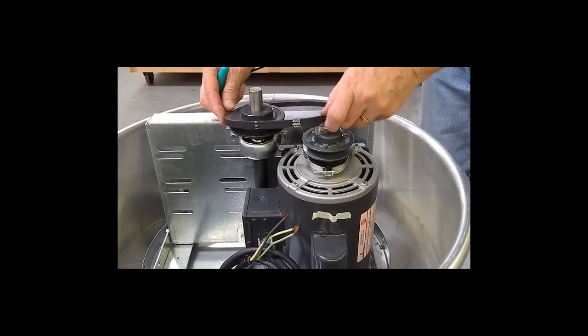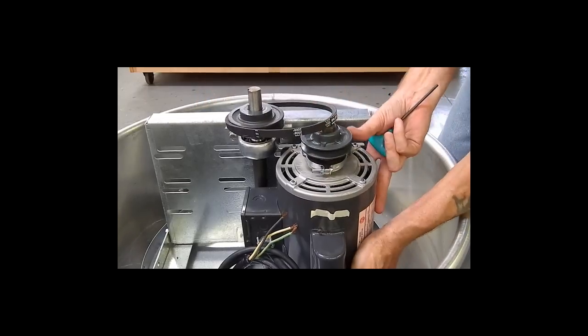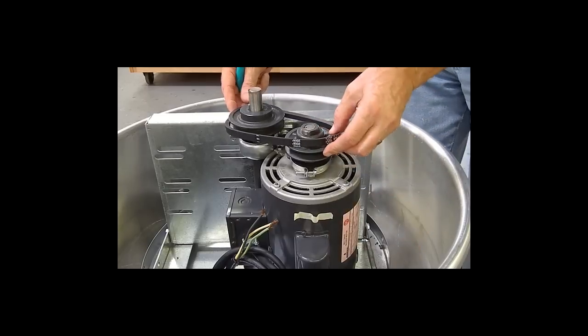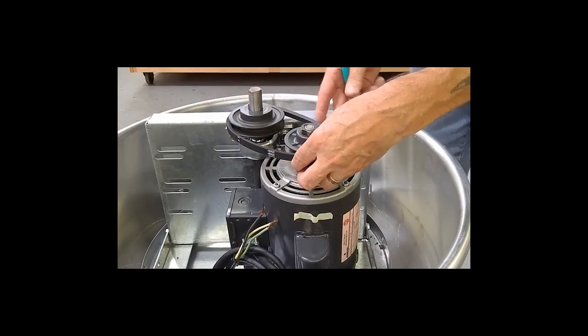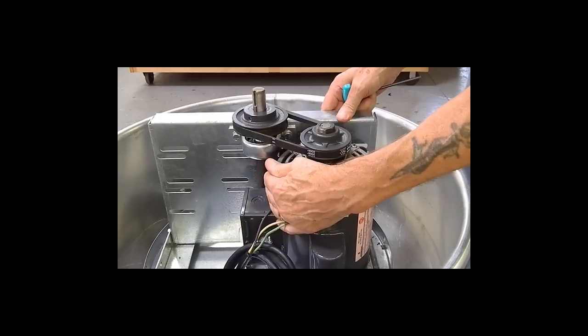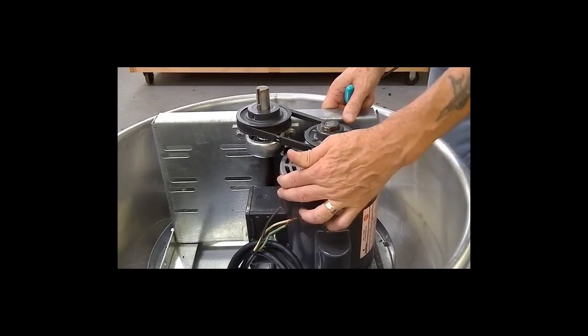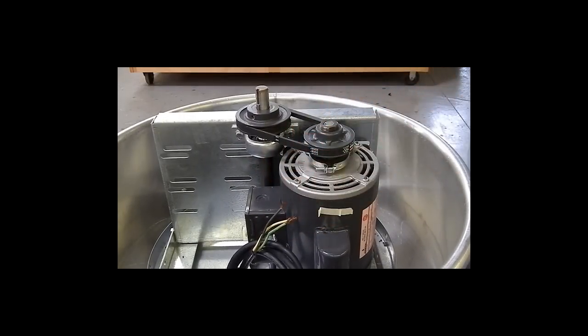Put the belt on. Tighten slightly by pulling sideways on the motor. Ensure the belt is horizontal and for this you can use the spirit level. Adjust the sheave height if required.